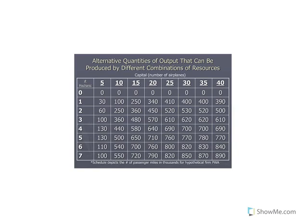To keep it simple, we assume this airline uses only two resources: planes — shown going down the columns — and mechanics, shown across the rows. They can utilize anywhere from five to forty airplanes, and anywhere from one to seven mechanics. The combination of mechanics hired and airplanes utilized tells us the maximum output this firm can produce. Each square in the production schedule shows the maximum output based on that particular combination of mechanics and airplanes.